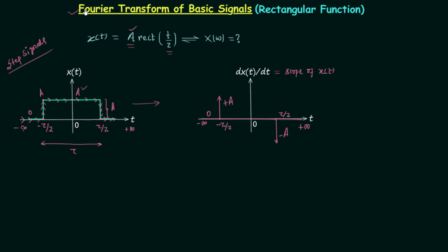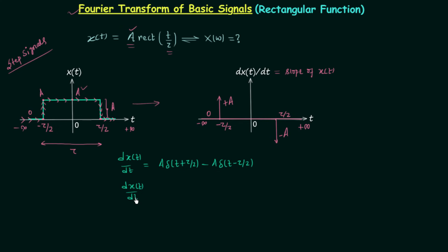We can now calculate the Fourier transform of the rectangular function easily using this differentiated waveform. Let's represent dxt over dt in terms of impulses. There are two impulses: the first is A delta(t plus tau by 2) and the second is minus A delta(t minus tau by 2). Taking A common: dxt over dt equals A times [delta(t plus tau by 2) minus delta(t minus tau by 2)].